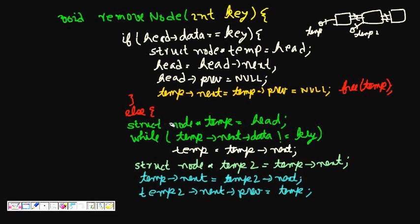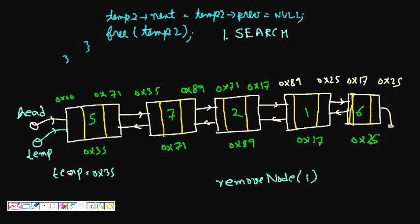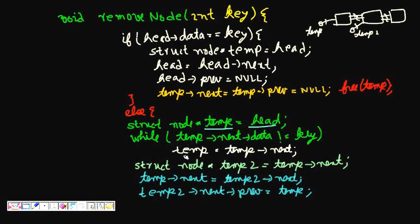Traversal is quite simple for a doubly linked list, similar to a singly linked list. We make a struct node pointer temp equal to head, so we have a temporary pointer that also points to the head. Now temp is at 0x35 so we can access the first node.